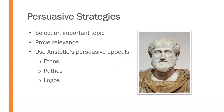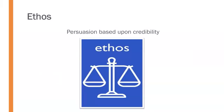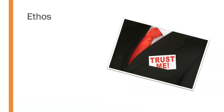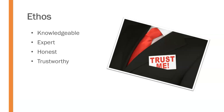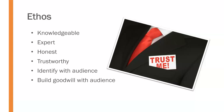We can use Aristotle's persuasive appeals — ethos, pathos, and logos. Ethos is persuasion based on credibility; it's telling the audience that they can trust you. To demonstrate effective ethos, we need to show the audience that we are knowledgeable and have expertise through experience, research, or academic knowledge. We need to be honest and trustworthy, identify with the audience, build goodwill, and let them know we have their best interests at heart. Finally, charismatic and confident delivery helps convey credibility to the audience.